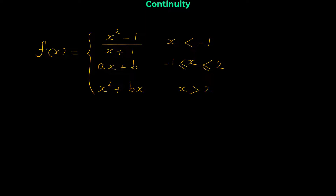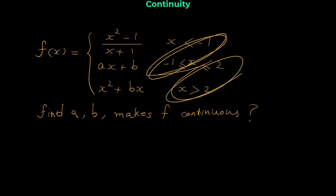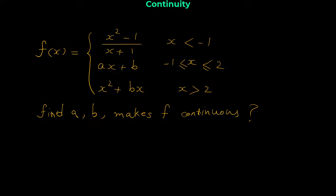We have two unknowns in the definition: a and b. The question is to find the values of a and b that make f continuous everywhere. The function can be discontinuous at x = -1 and x = 2, because the function rule changes at those points — a different equation applies on each side.